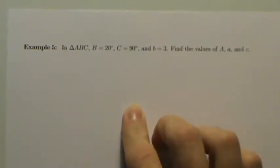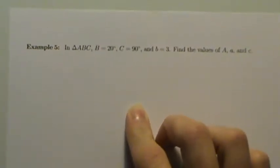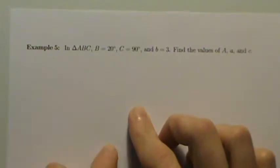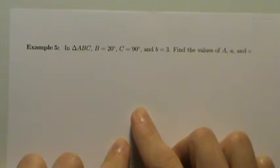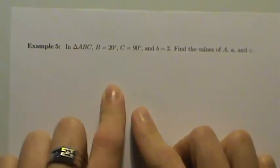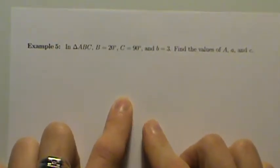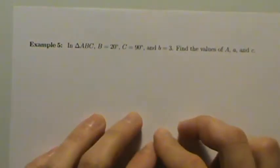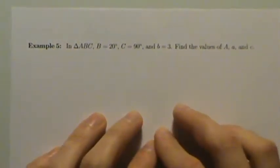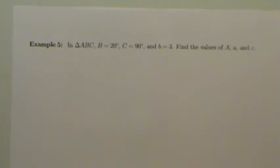Here's example 5 of applications of trig. We're going to start talking about solving triangles, specifically solving right triangles. Basically, what it means to solve a triangle is you're given some information about some of the angles and some of the sides of a triangle, and you use that information and some trig functions to find the missing angles and missing sides.